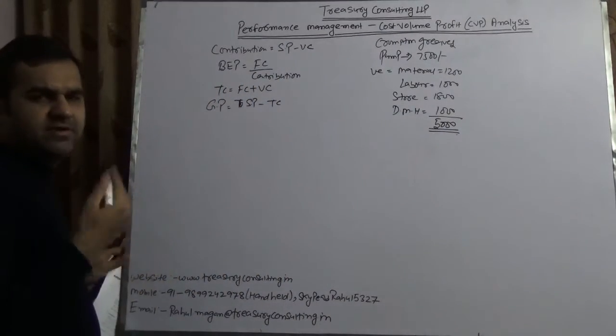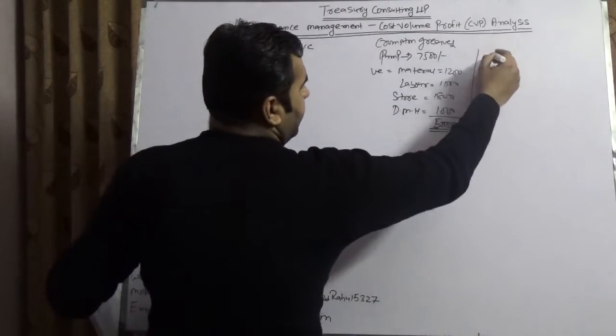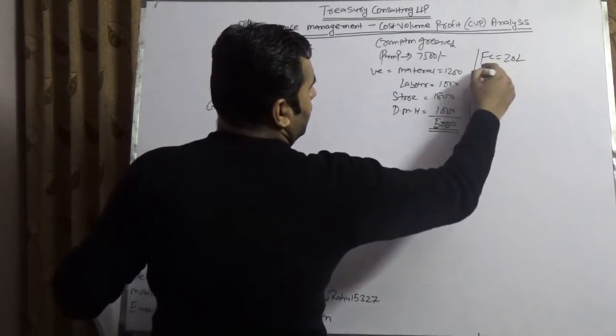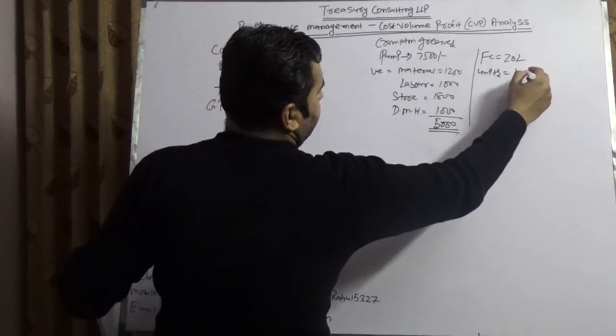Assuming the assembly where Crompton Greaves is making this assembly has a fixed cost of $20,000 and the total units being made is 10,000.